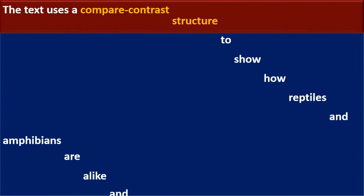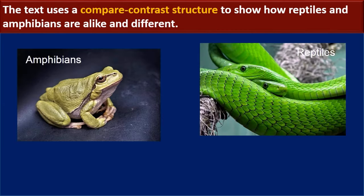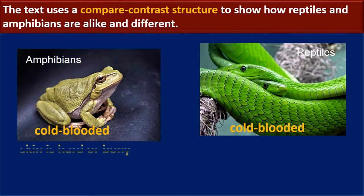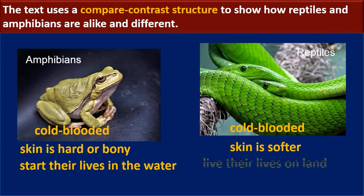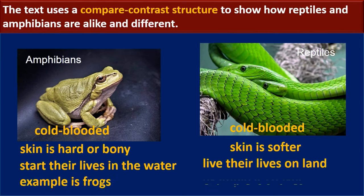The text uses a compare-contrast structure to show how reptiles and amphibians are alike and different. Amphibians: cold-blooded, skin is softer, start their lives in the water — example is frogs. Reptiles: cold-blooded, skin is hard or bony, live their lives on land — example is snakes.